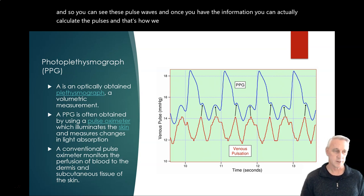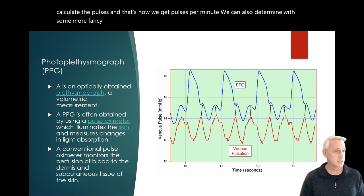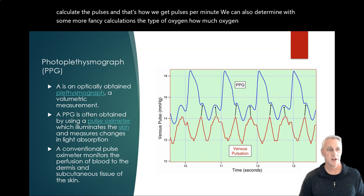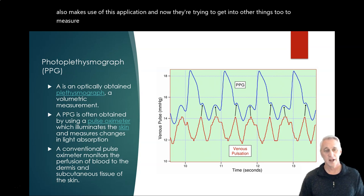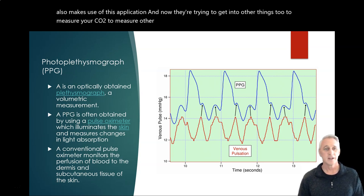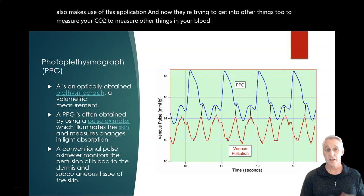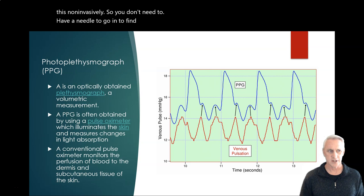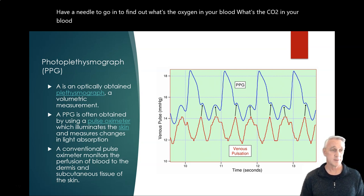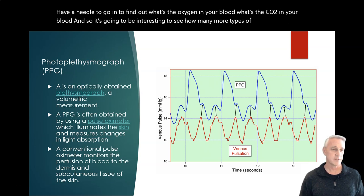With some more advanced calculations, you can also determine the type and amount of oxygen in the blood, so an oximeter also makes use of this application. They're also trying to extend this to measure CO2 and other things in your blood non-invasively using more variations of this — so you don't need a needle to find out the oxygen or CO2 in your blood. It's going to be interesting to see how many more types of measurements they can develop this way.